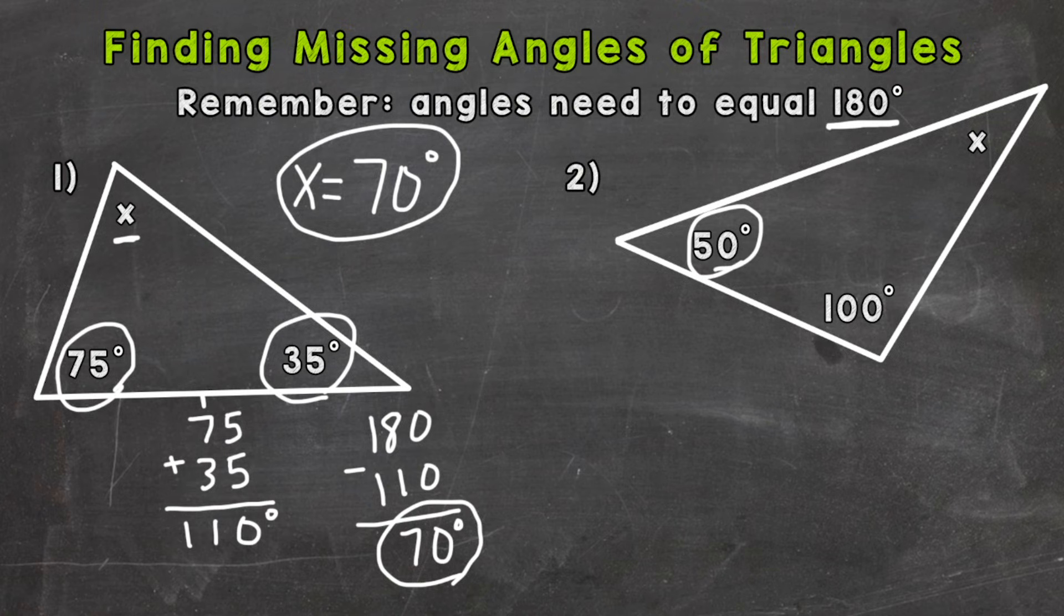We're given 50 degrees and 100 degrees. So the first thing we need to do is add those together.